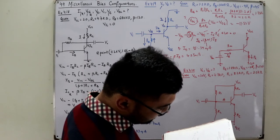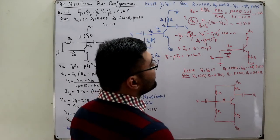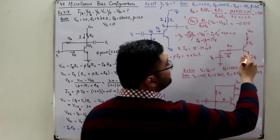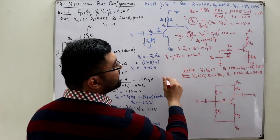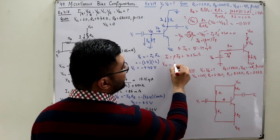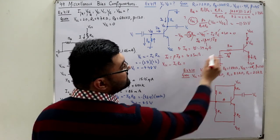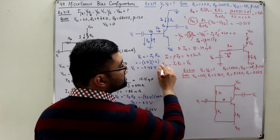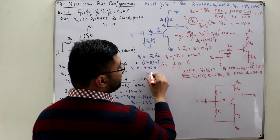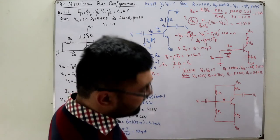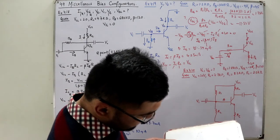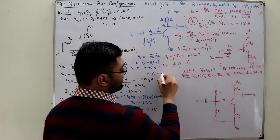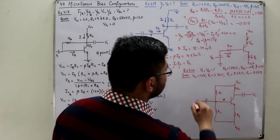VC is the voltage at the collector terminal. Applying KVL from VCC down: VC = VCC minus IC·RC. Substituting the values, VC comes out to be 8.53 volts.